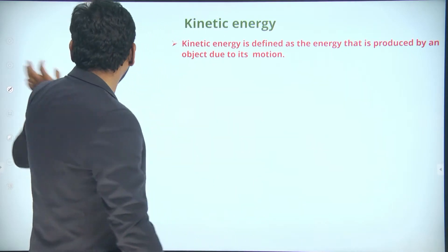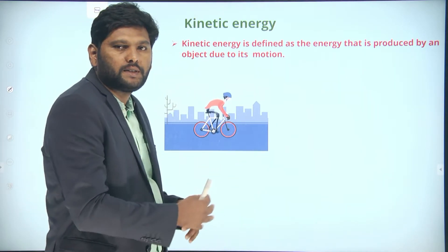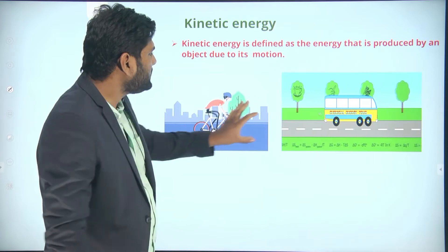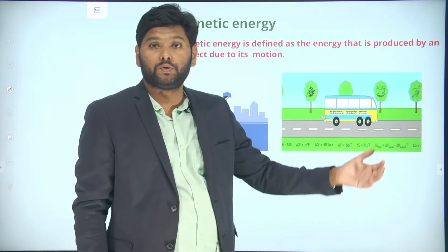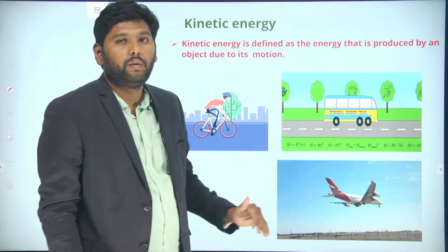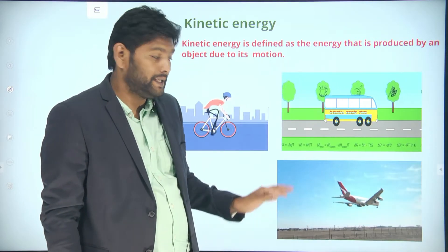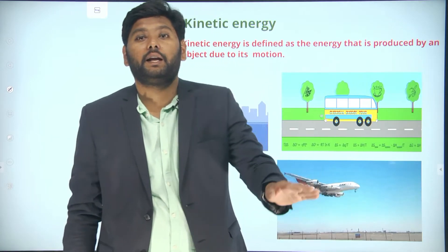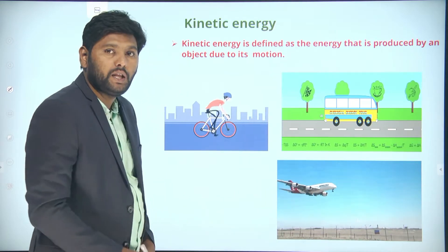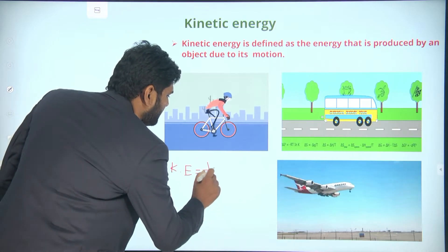Let us see some pictures here. This person is riding a bicycle — when the person is riding the bicycle, this person possesses kinetic energy. Here, the bus is moving, so this bus possesses kinetic energy. And also, the aeroplane is moving and is at height h. Since this aeroplane is moving and at height, it possesses both kinetic energy and potential energy. The formula for kinetic energy is half mv squared — where m means mass of the body and v means velocity of the object.